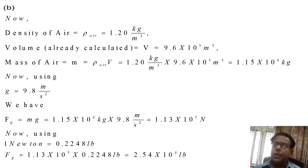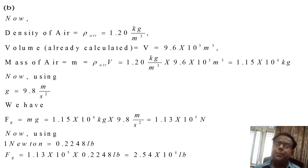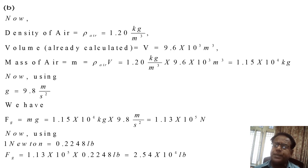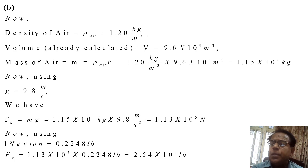We have found the answer in Newtons, but we are required to convert our answer into pounds. Using the conversion factor: one Newton equals 0.2248 pounds (lb). Therefore Fg = 1.13 × 10⁵ × 0.2248 lb, which equals 2.54 × 10⁴ pounds. This is the answer to our problem.